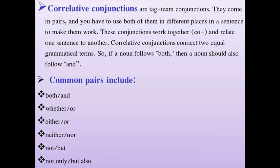Now the third type of conjunction: correlative conjunction. Correlative conjunctions are tag-team conjunctions — they work as a team. They come in pairs and you have to use both of them in different places in a sentence to make them work. They can fit anywhere in a sentence, but always as a pair. These conjunctions work together and relate one sentence element to another.